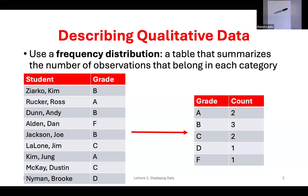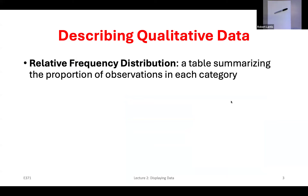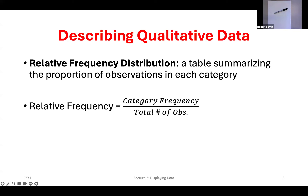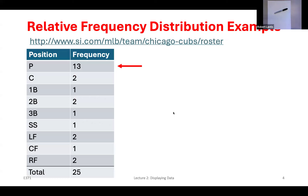What might be a little more helpful, especially with a huge data set of hundreds of students, is knowing the proportion rather than just the count. So we're going to take our frequency distribution and turn it into what we call a relative frequency distribution. We take each response's frequency — how many students got A's — and divide it by the total number of observations in the data set, doing that for every single category.